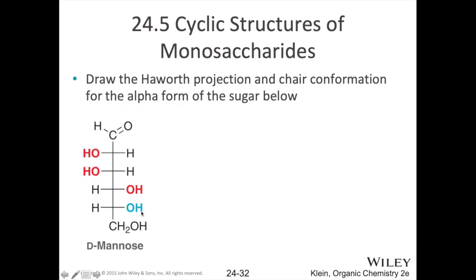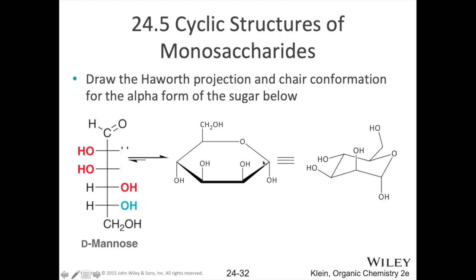Let's practice. Here we have a Fischer projection of D-mannose. Draw the Haworth projection — specifically the pyranose (six-membered ring) with the oxygen in the top right corner. To do this, flip the molecule 90 degrees clockwise. All groups on the right point downwards; all groups on the left point upwards. The question asks you to draw the alpha form, so your alcohol group on the anomeric carbon (number one carbon) is pointing downwards. Here's the Haworth projection of D-mannose with that anomeric carbon shown.